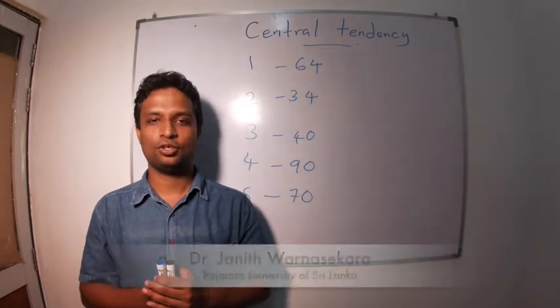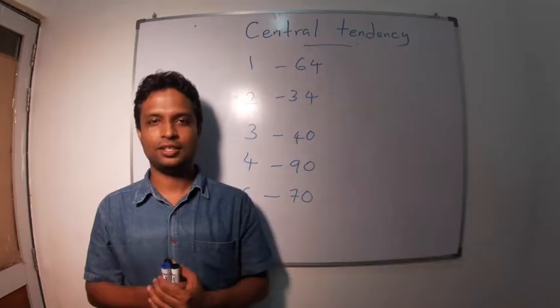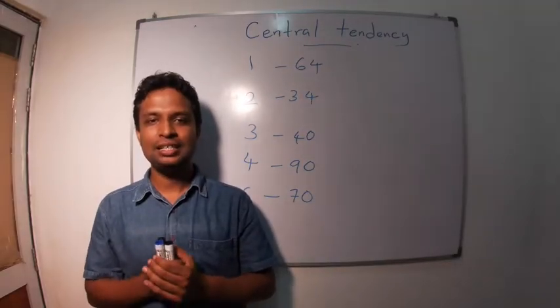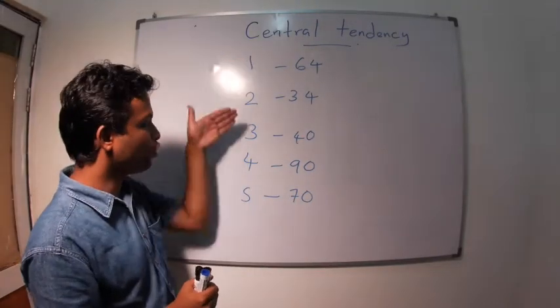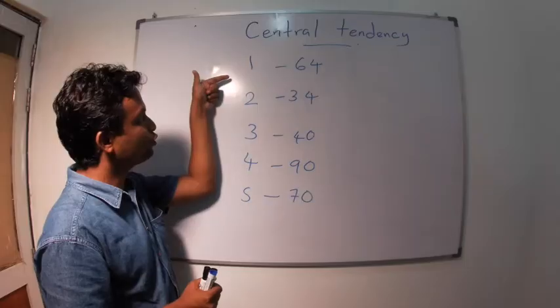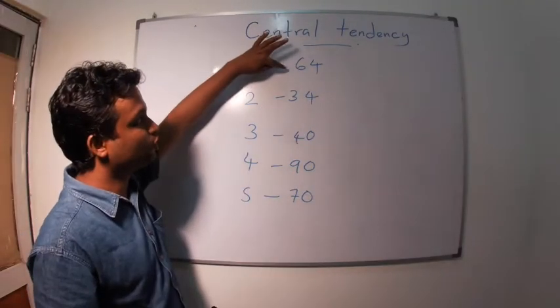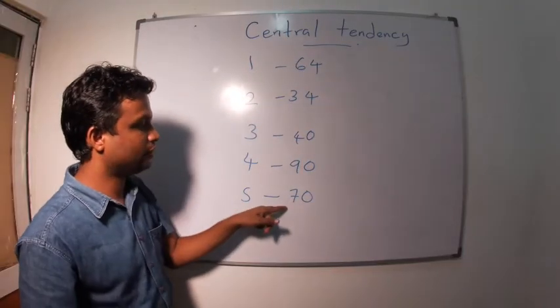Welcome to the fourth lecture of statistics for non-statisticians lecture series. Today I am going to discuss central tendency measures. I have drawn marks of five students: one, two, three, four, five. The marks are 64, 34, 40, 90, and 70.